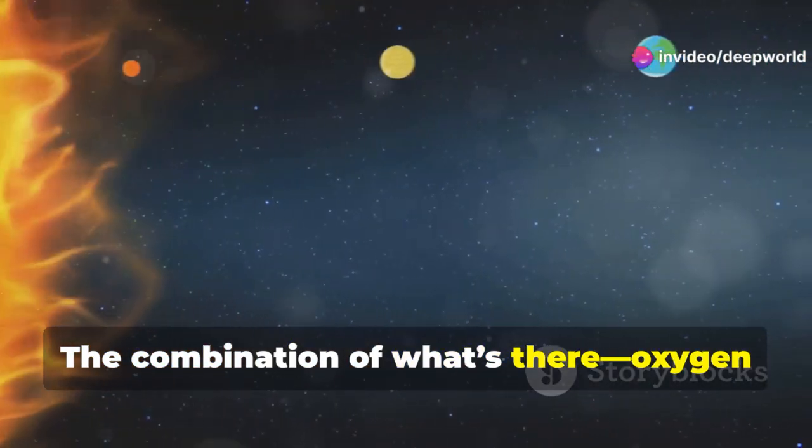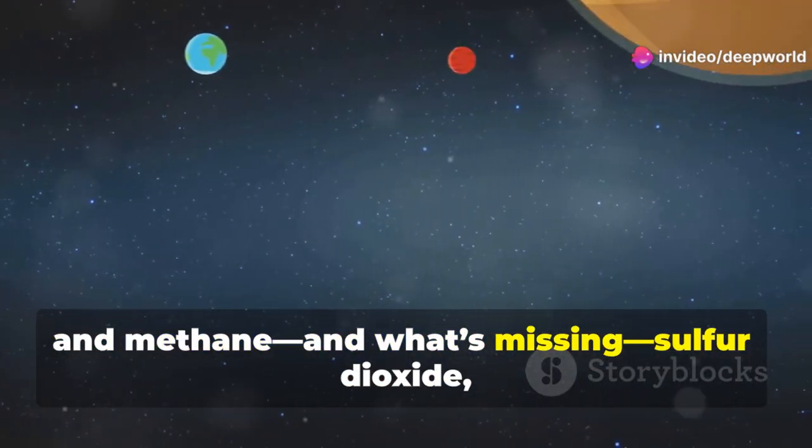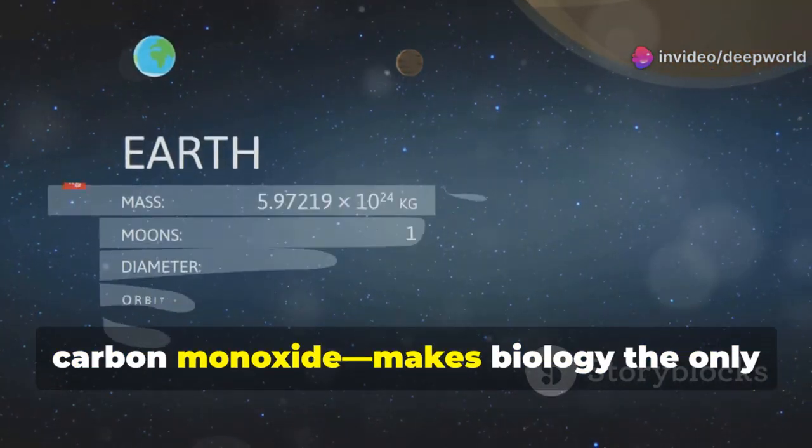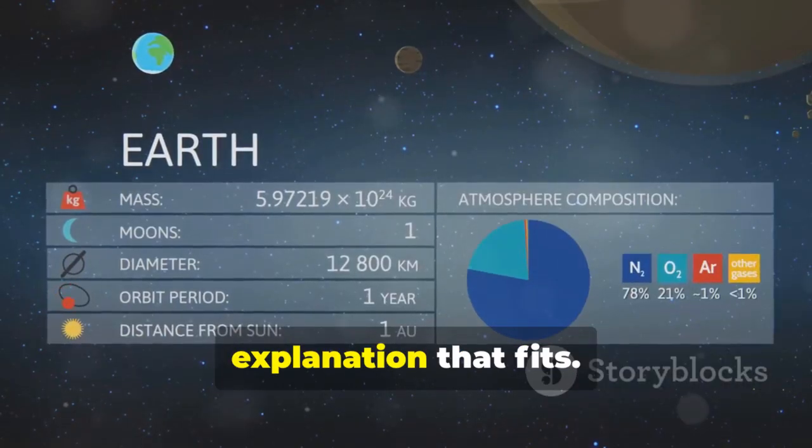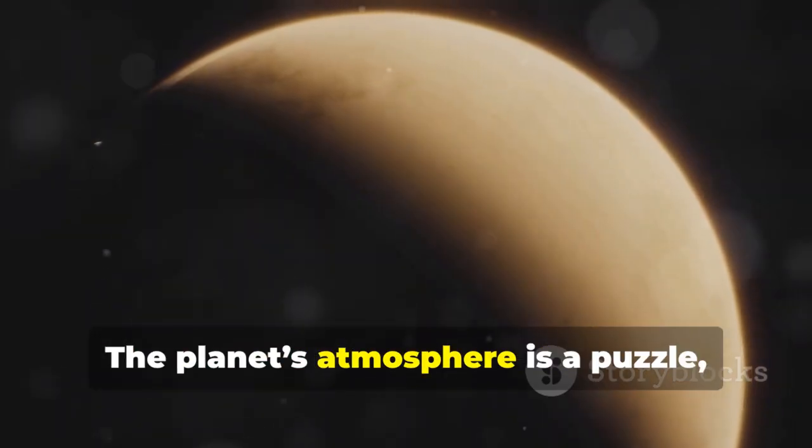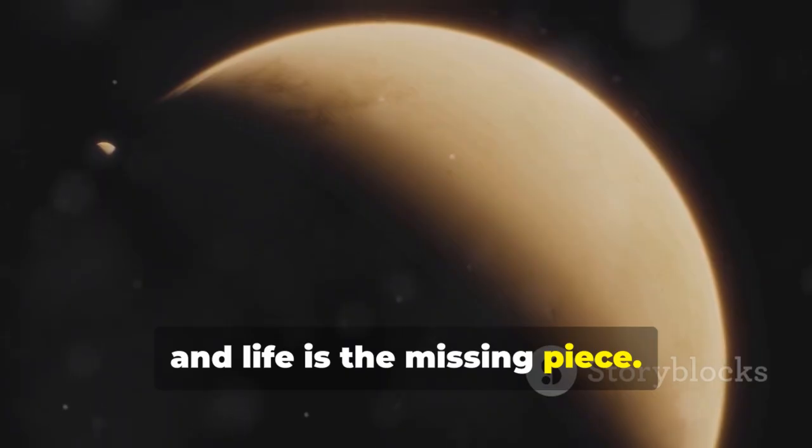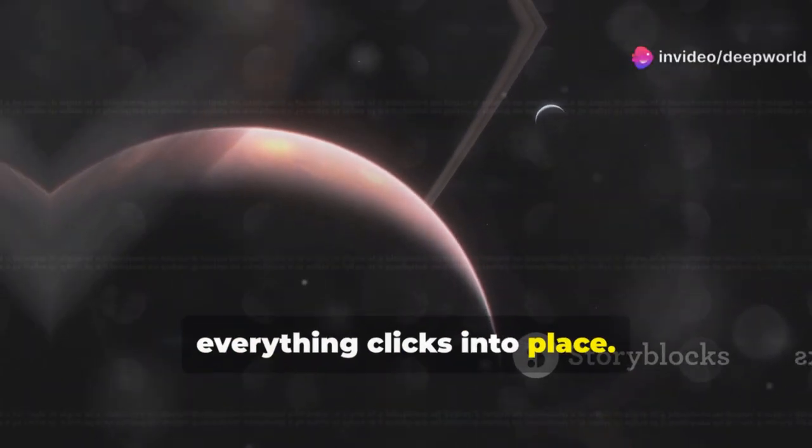The combination of what's there—oxygen and methane—and what's missing—sulfur dioxide, carbon monoxide—makes biology the only explanation that fits. The planet's atmosphere is a puzzle, and life is the missing piece. When you add life, everything clicks into place.